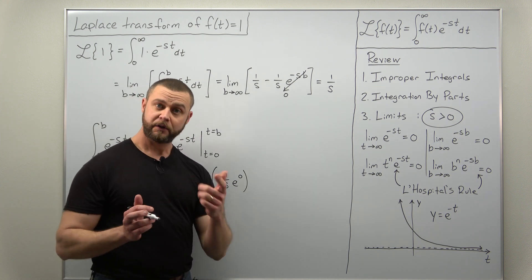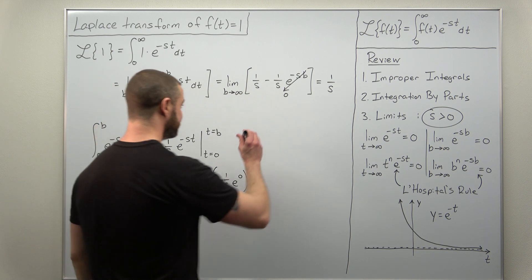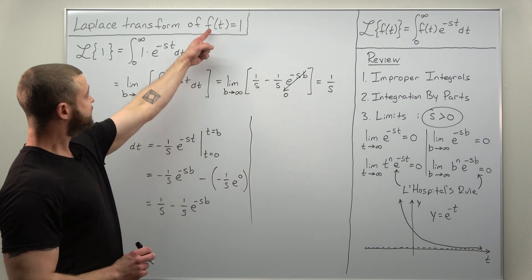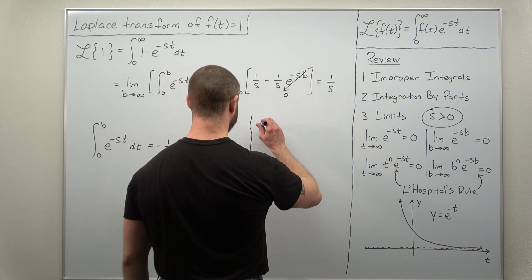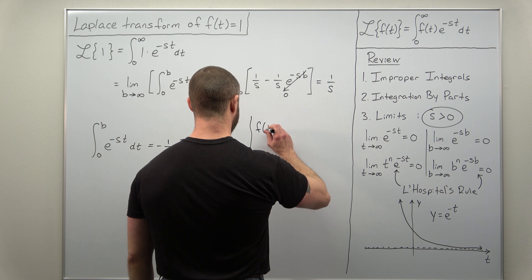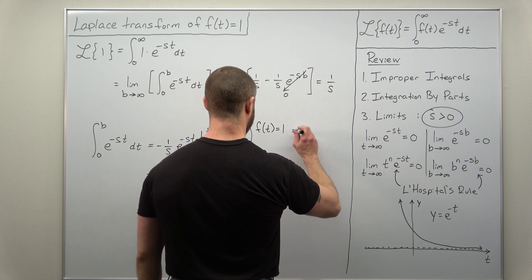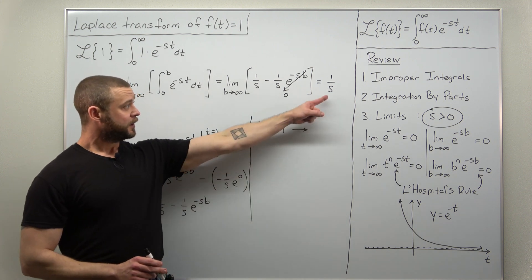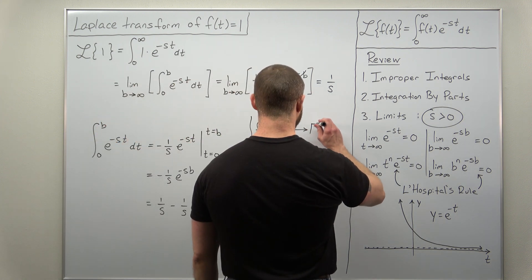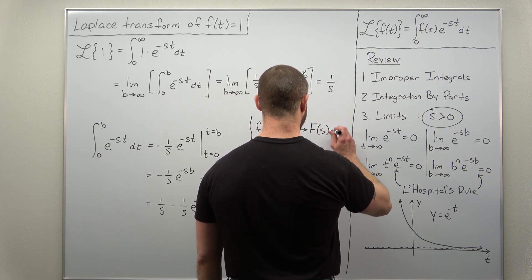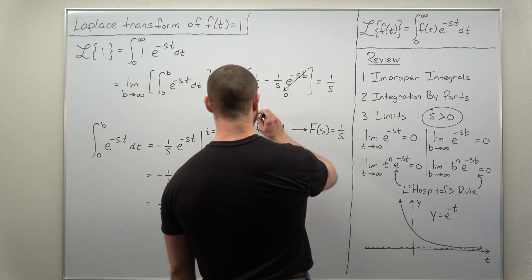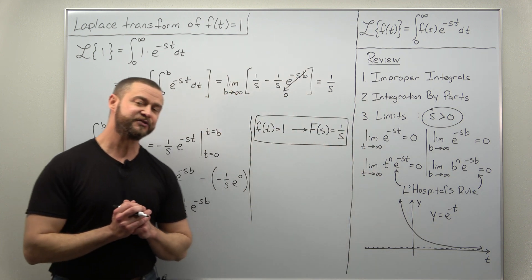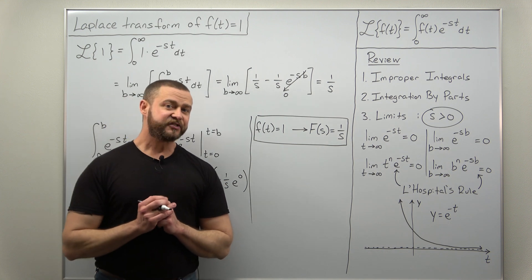So just to write this down in the notation that you're going to be using for Laplace transforms, we would have started with f of t as one, and we calculated our Laplace transform of that. That comes out to one over s. And that is arguably the simplest Laplace transform that you could be asked to calculate.